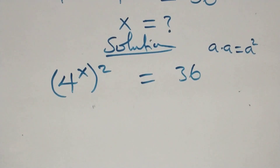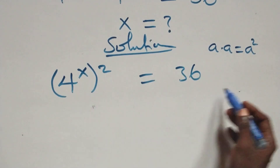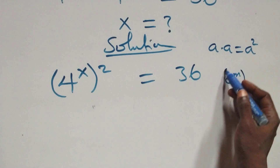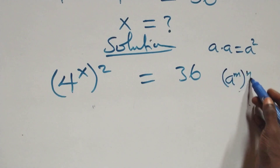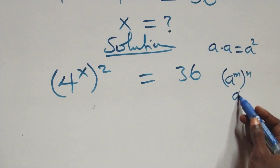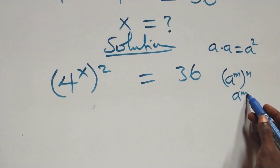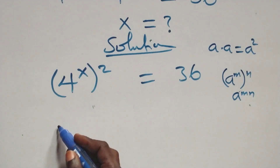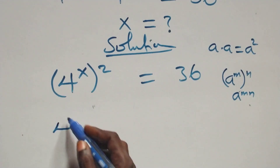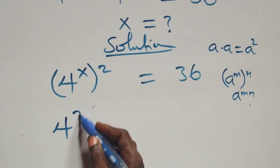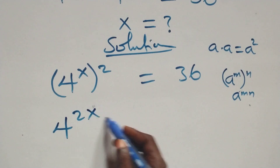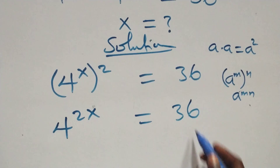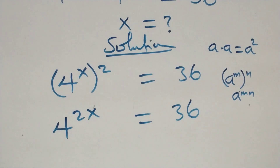The next step here: this follows when we have a raised to power n, raised to power n, which is the same thing as a raised to power n times n. At this, the power multiplies, and we have 4 raised to power 2x equals 36 on this side.